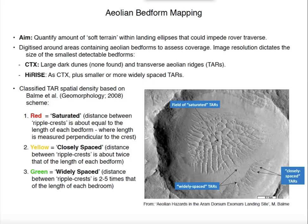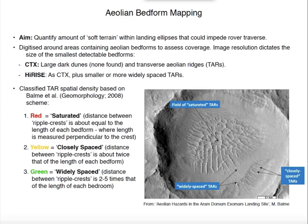Another thing I've done quite a lot is mapping aeolian bedforms. Here's an example from the Aram Dorsum landing site — an initial study done by Matt Baum at the Open University. The idea was to quantify the amount of soft material or soft terrain within the landing ellipse that could potentially impede rover traverse. Making maps of these features is paramount, as requested by the landing site selection working group. We surveyed them systematically across a grid, classifying areas using a traffic light scheme: red is most dangerous, yellow is closely spaced, and green is widely spaced — maybe traversable.